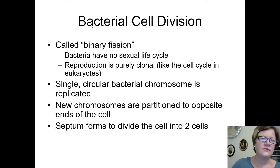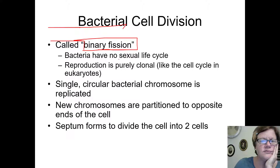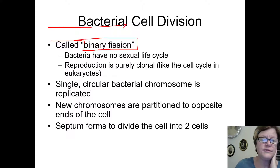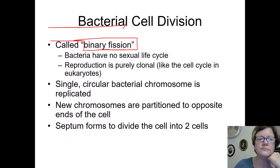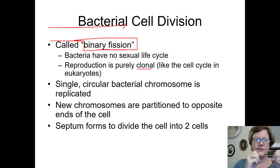When prokaryotic cells go through this kind of cell division, we refer to it as binary fission. There is no sexual life cycle in bacteria — they do not produce eggs and sperm. So the reproduction of the whole organism, since it is only one cell, is simply the division of that cell into two cells. We say this kind of reproduction is clonal because you start with one cell, go through all the steps, and end up with two identical cells — clones.